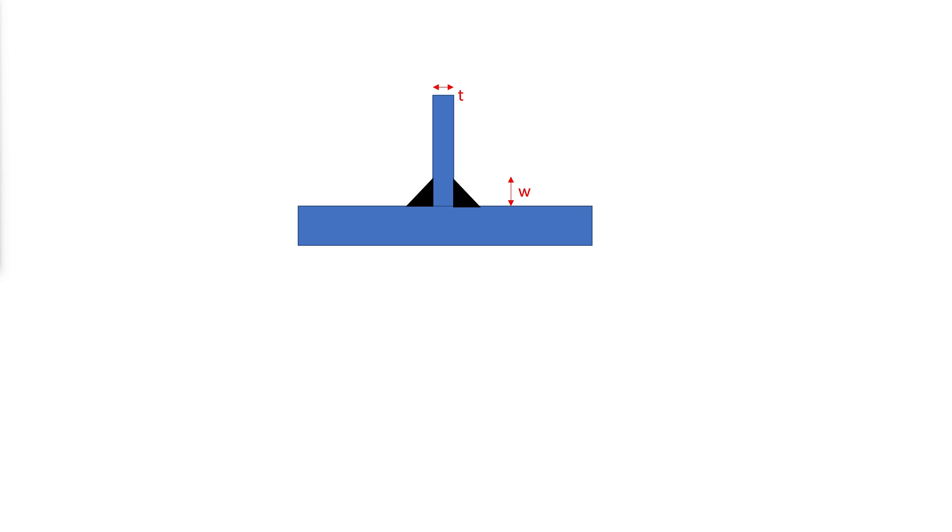Along the edge of a part less than 1/4 inch thick, the maximum fillet weld size is equal to the thickness of the part. For parts 1/4 inch or more in thickness, the maximum size is T minus 1/16th of an inch, where T is the thickness of the part.